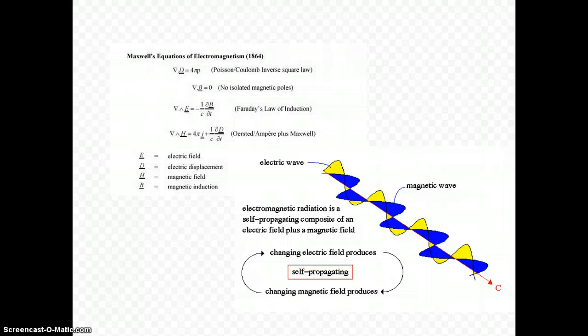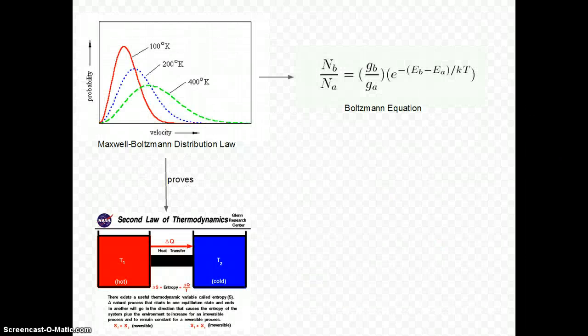While working as a professor of mathematical physics, Boltzmann made astounding impacts on modern physics. He proved the second law of thermodynamics using math, probability, and what is now known as statistical mechanics.